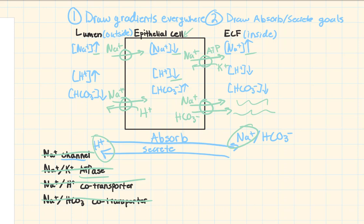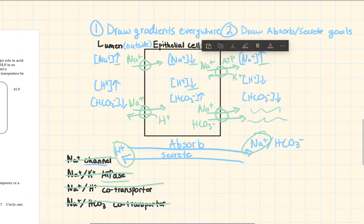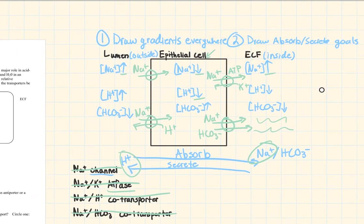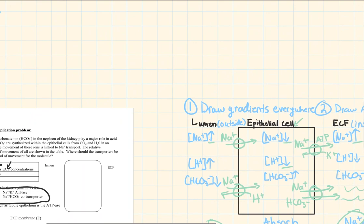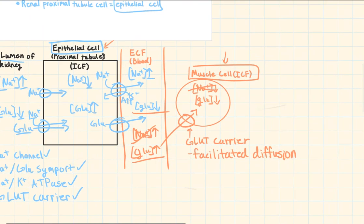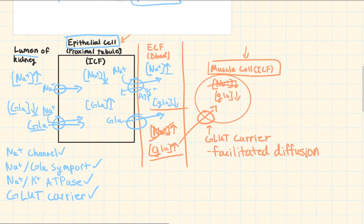Definitely retry this problem on your own, starting from the setup. After drawing your gradients and your goals, see if you can work through it again. Also, go back to the first part of this discussion and try the glucose problem again — see if glucose transport makes more sense now that you know more about the setup, the gradients, and the transporters.